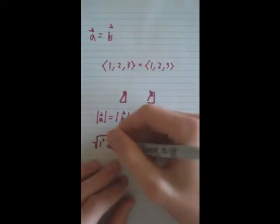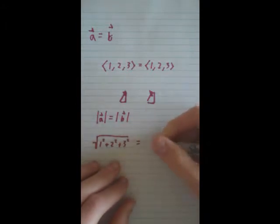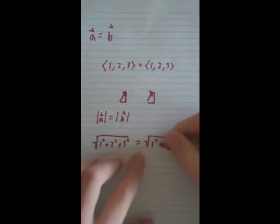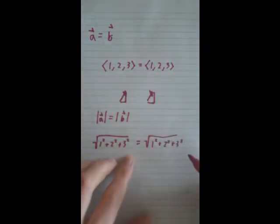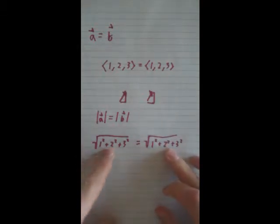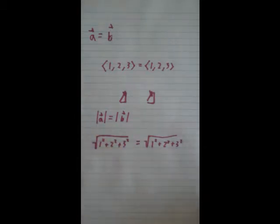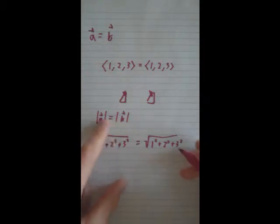So we'll find the Pythagorean Theorem of this: 1 squared plus 2 squared plus 3 squared, and 1 squared plus 2 squared plus 3 squared. So here's the Pythagorean Theorem of A, and here it is of B. You really don't have to multiply this out to see that they are going to be equal. The magnitudes will be equal.